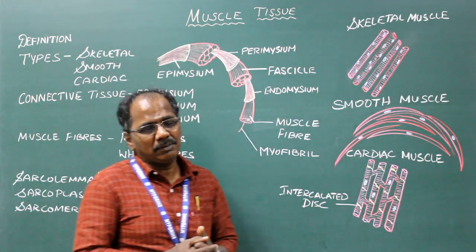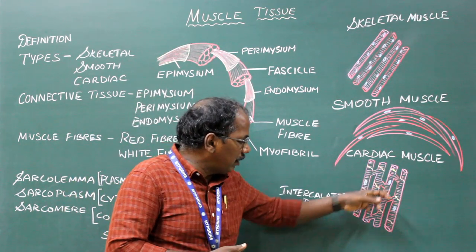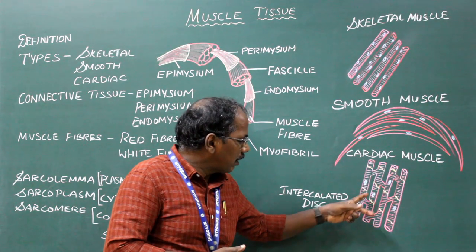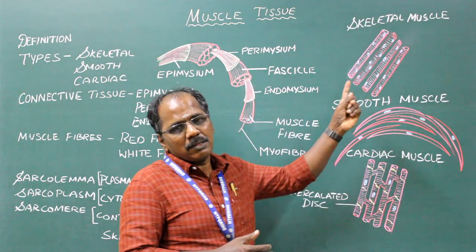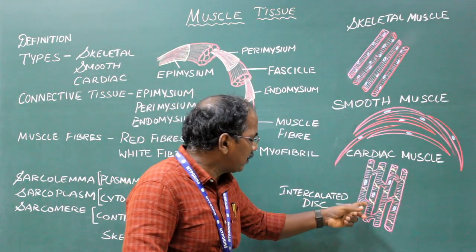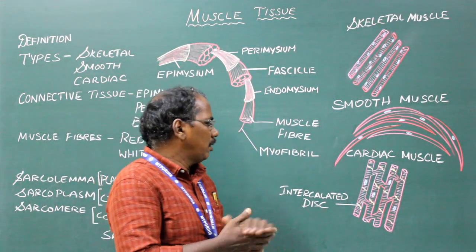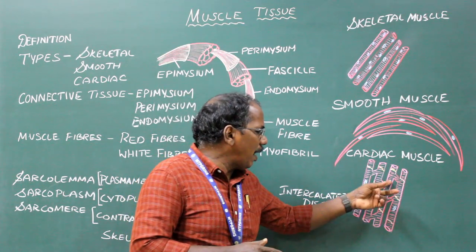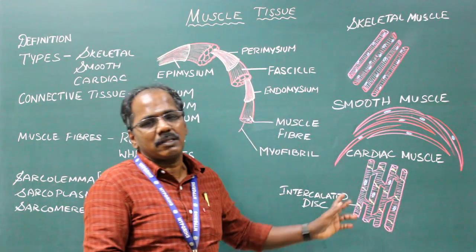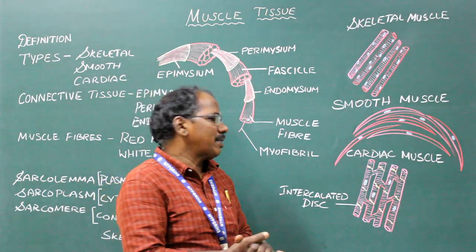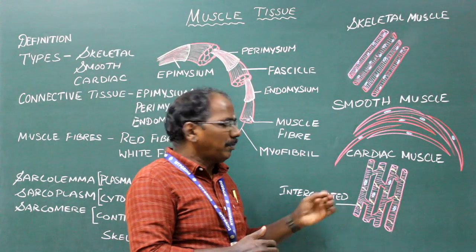Cardiac muscle. It consists of elongated cylindrical fibers which branch and anastomose. In skeletal muscle there is no branching or anastomosing, whereas in cardiac muscle we have branches which go and anastomose — that is, join with adjacent branches. It is uninucleated and centrally placed. Presence of transverse striations. It is innervated by the autonomic nervous system. Example: heart.